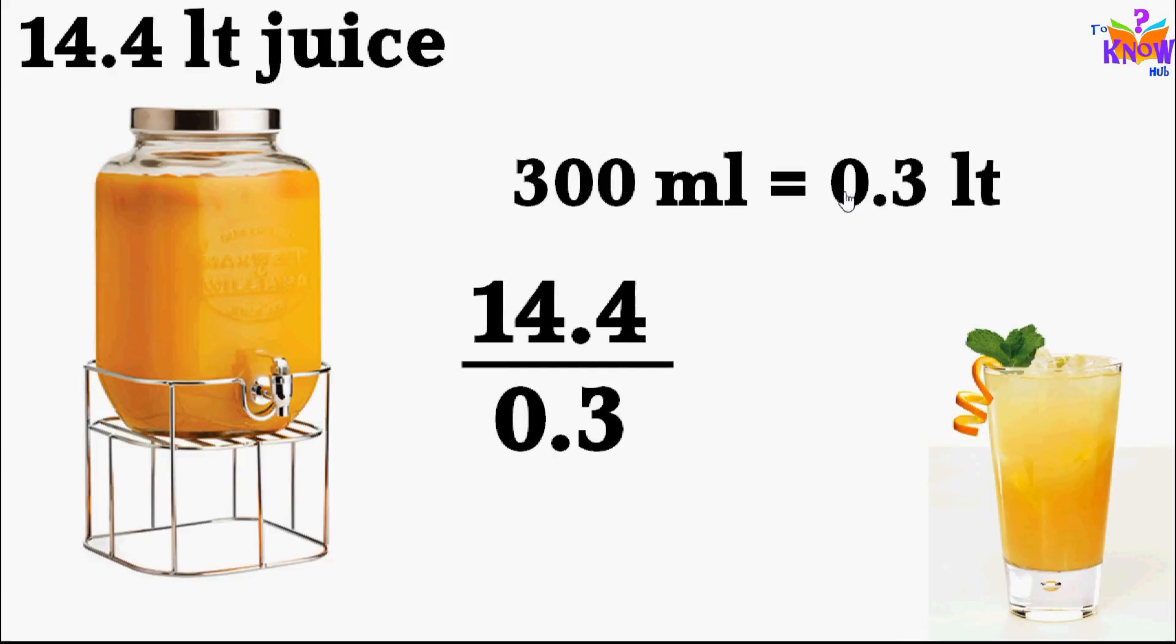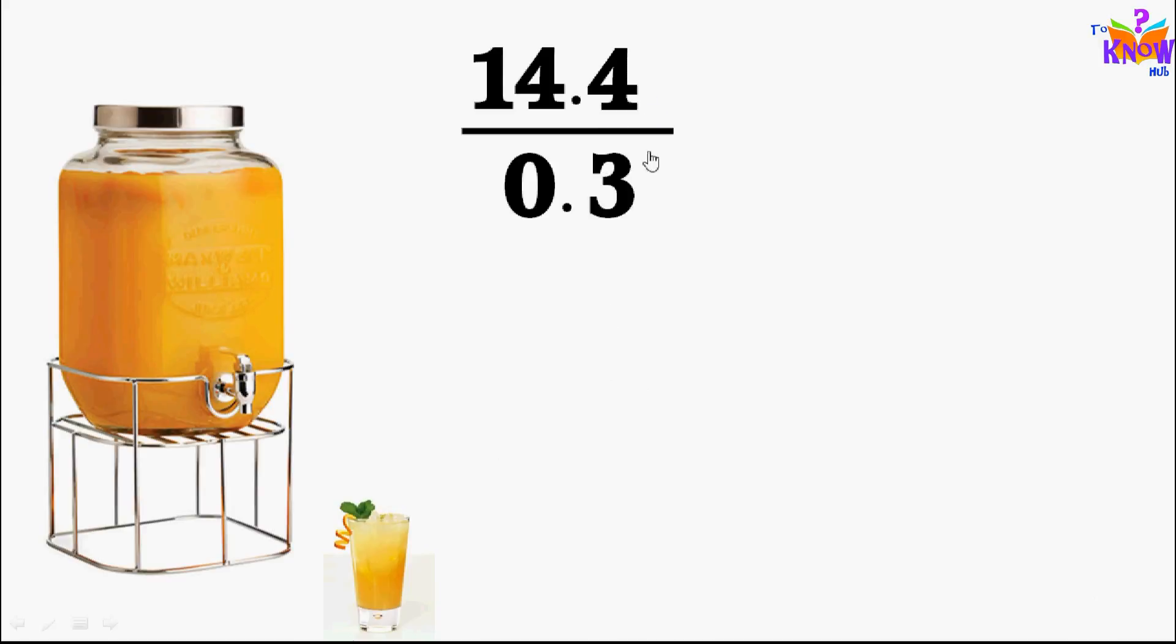So how many people can you serve? 14.4 divided by 0.3. We have to lose decimal point from the divisor. Understand the logic behind it: we can multiply numerator and denominator of a fraction by same number. If we multiply up and down by 10, decimal would shift to right by one place. If we multiply by 100, decimal would shift to right by two places. If we multiply 0.3 by 10, 0.3 would become 3, we lose the decimal.